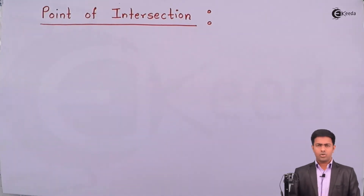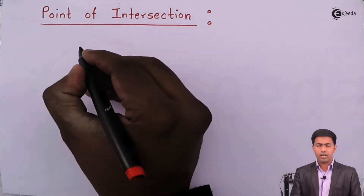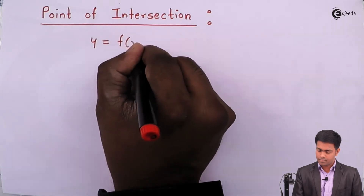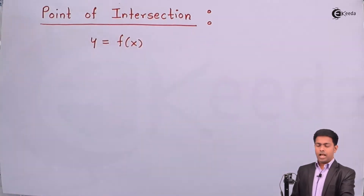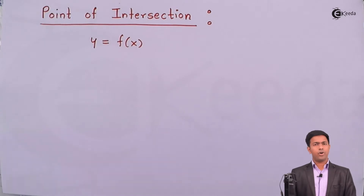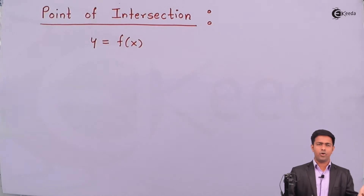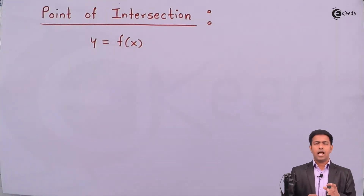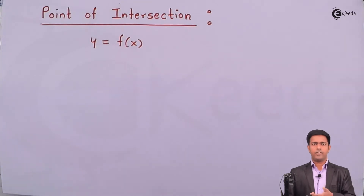Let's assume that you have been given the equation of a curve as y equal to f of x, and you want to find out the point of intersection. To get the point of intersection, we put x equal to 0 and find the value of y — that gives one point of intersection. Then we put y equal to 0 and find the value of x — that gives another point of intersection.